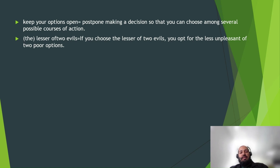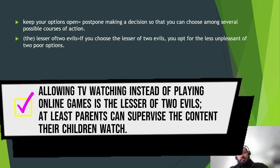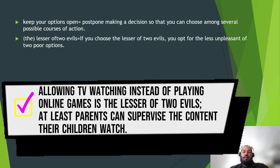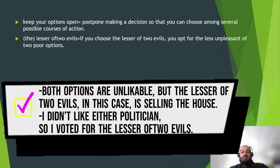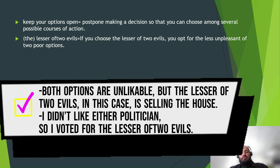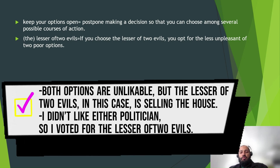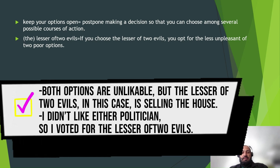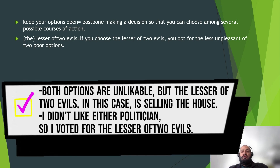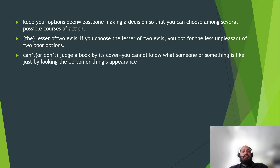'The lesser of two evils' means one option is better than the other — if you choose the lesser of two evils, you opt for the less unpleasant of two poor options. For example: 'Allowing TV watching instead of playing online games is the lesser of two evils for your children.' Or: 'Both your options are unlikable, but the lesser of two evils in this case is selling the house.' 'I didn't like either politician, so I voted for the lesser of two evils.'